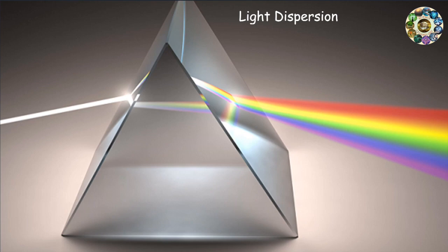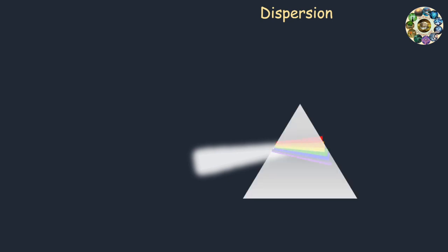These colors are often observed as light passes through a triangular prism. Prism does dispersion of light because the light of different colors has different wavelengths that are refracted or deviated to different extents.